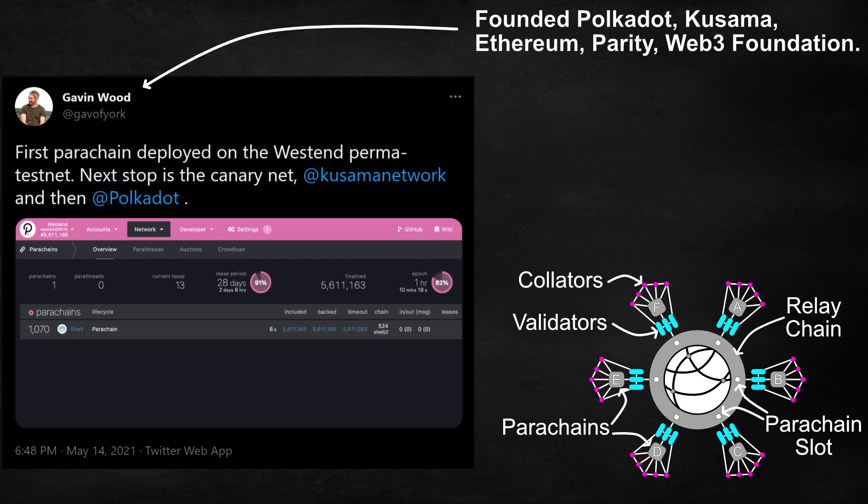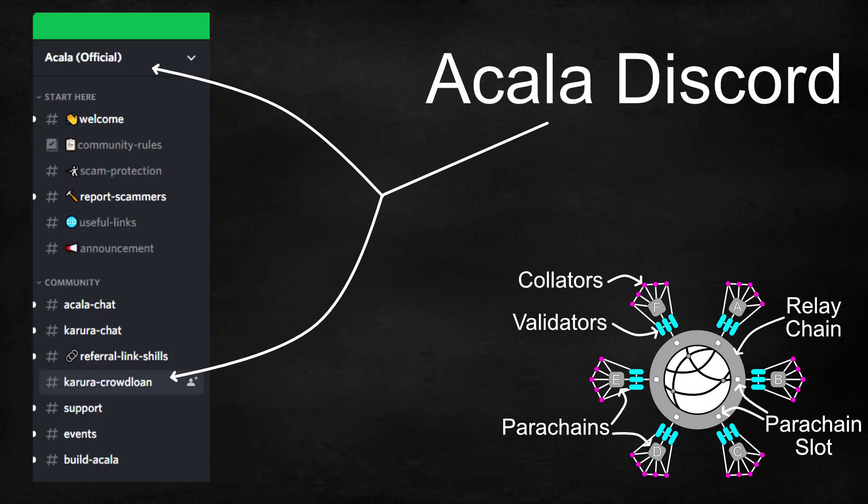And then Polkadot. Along with this, some of the parachain project teams have updated their communities on Discord and Telegram with specific channels dedicated to the parachain auction crowdloan events.